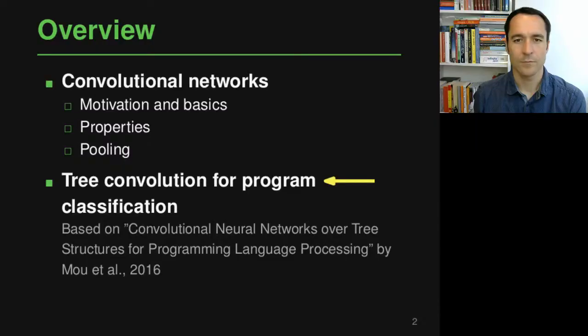Hi, welcome back to analyzing software using deep learning. This is the second part of this module of the course where we look into convolutional neural networks and how to use them to analyze programs. In this second part, you now know how convolutional neural networks work in general, and what we now do is look at one specific application in the area of programs where we'll see how they can be used for classifying programs.